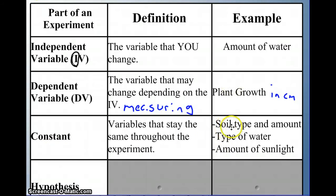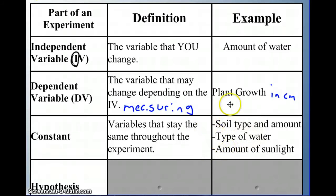An example for our question: we want to keep the soil type the same, we want to keep the type of water the same. You don't want to give one plant Gatorade and one plant Dasani — that Gatorade plant might beat up the Dasani plant. Also the amount of sunlight you don't want to change; you're only testing the amount of water. Your independent variable and dependent variable cannot be constants because those things are clearly not staying constant.